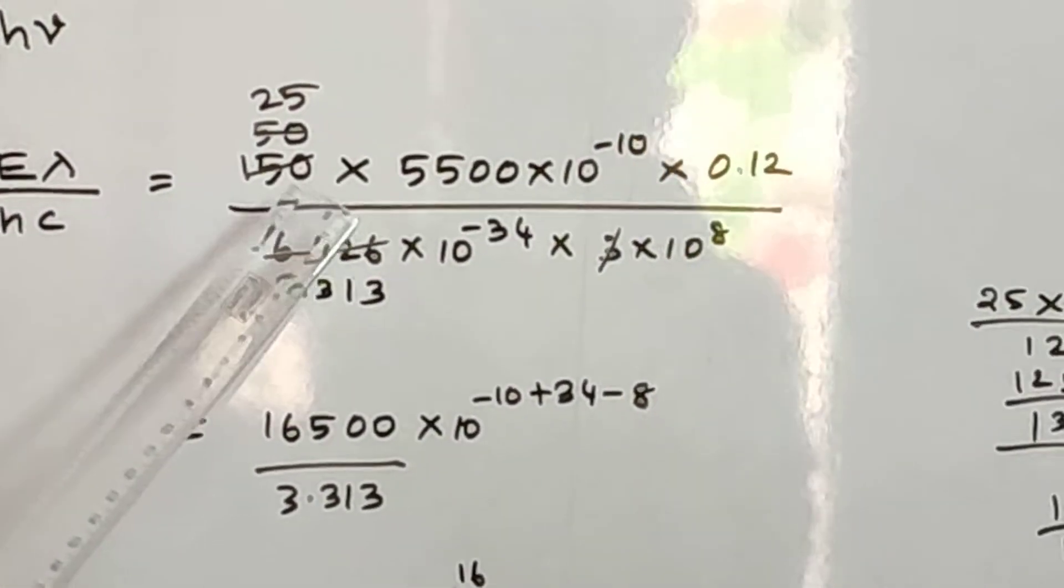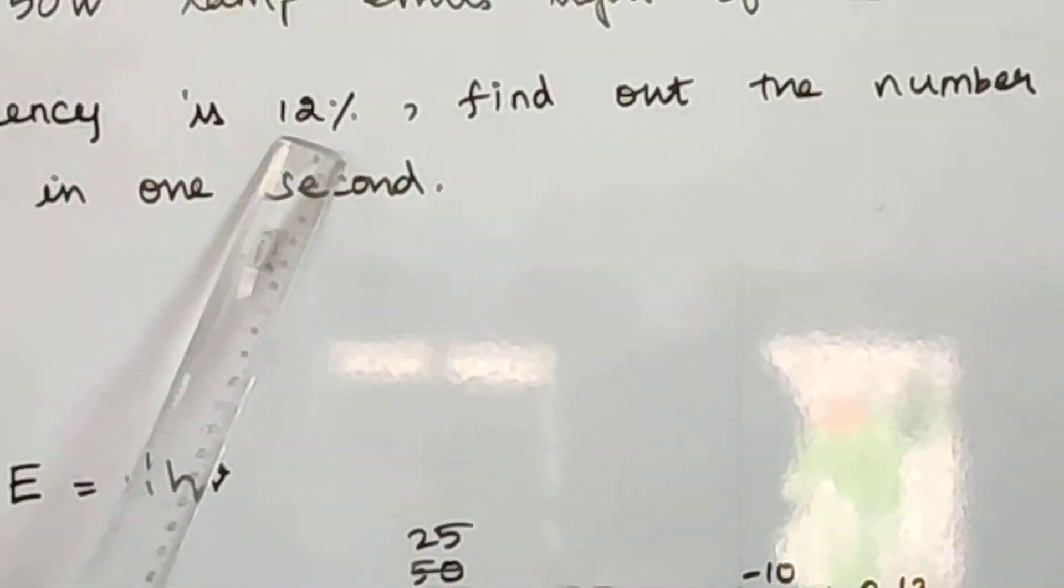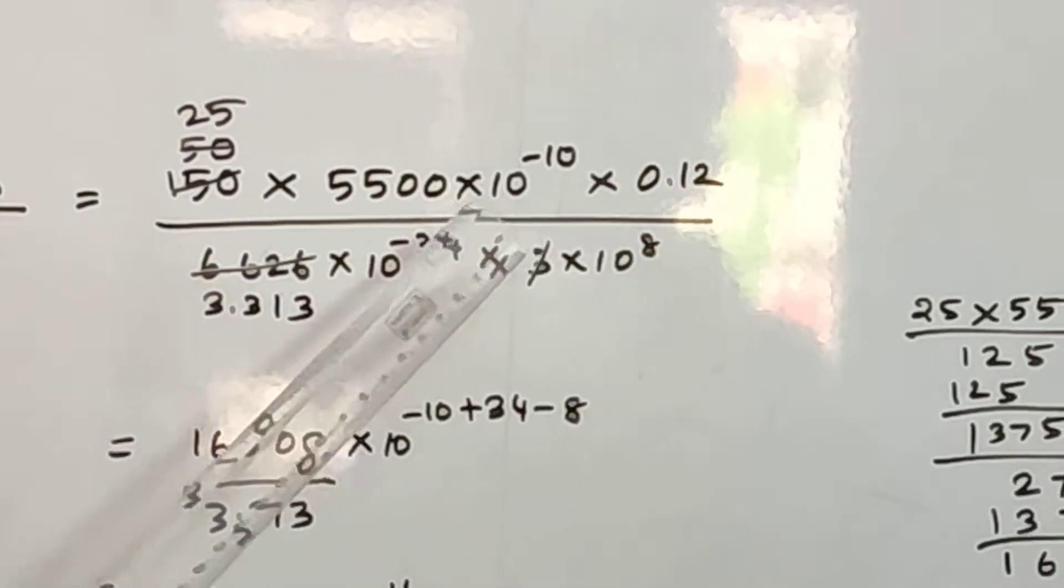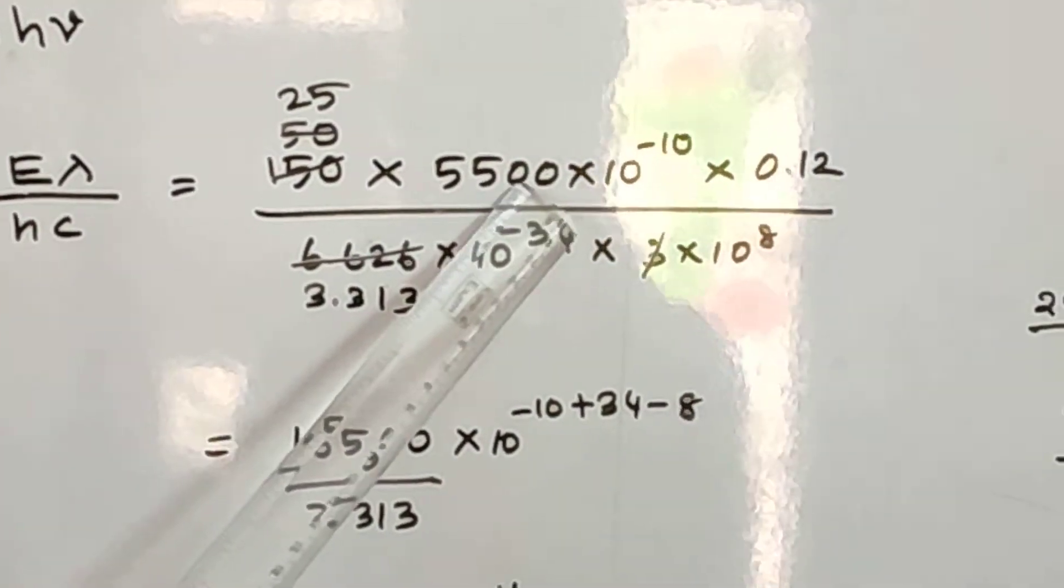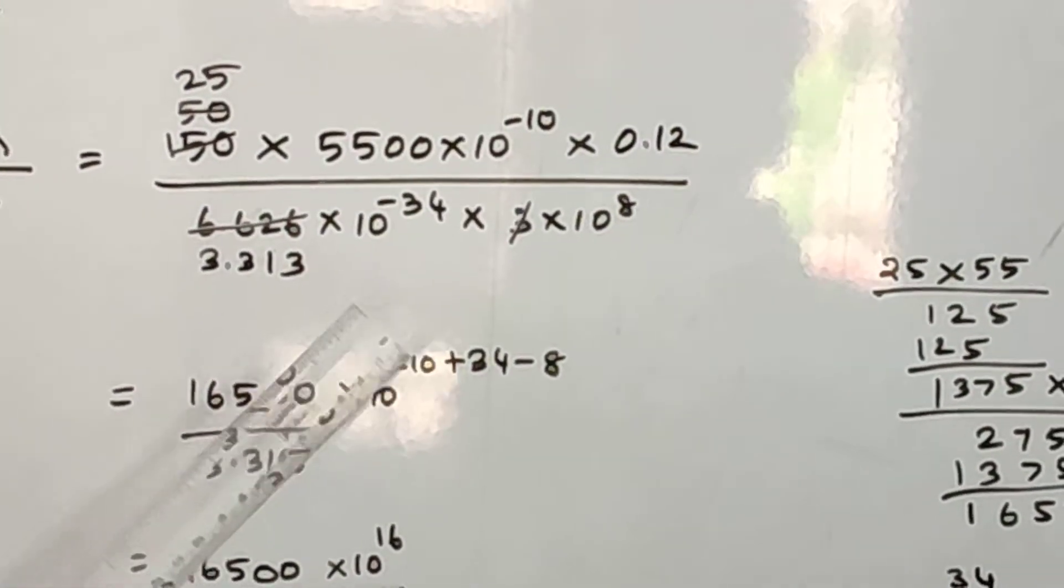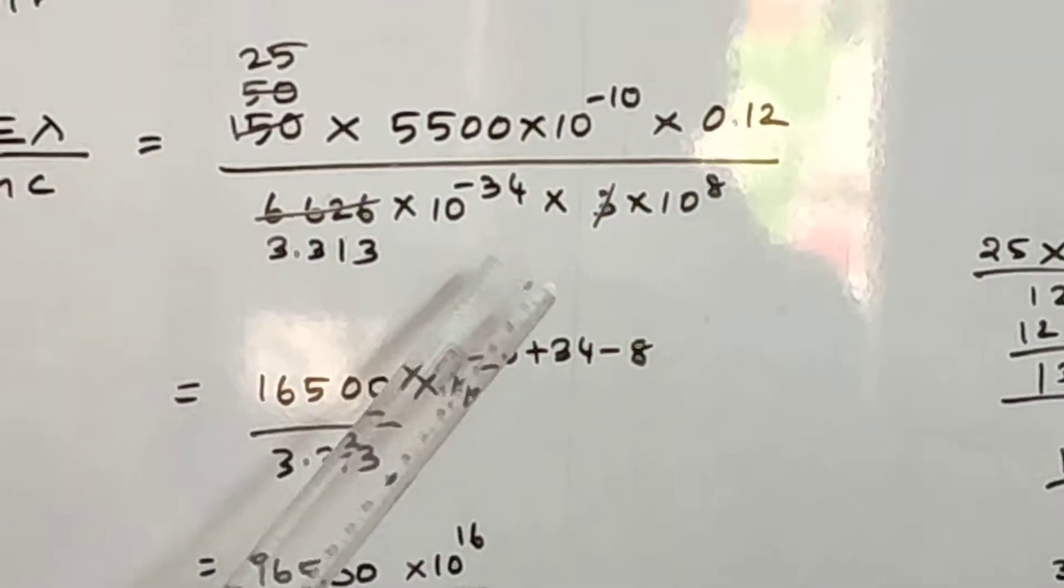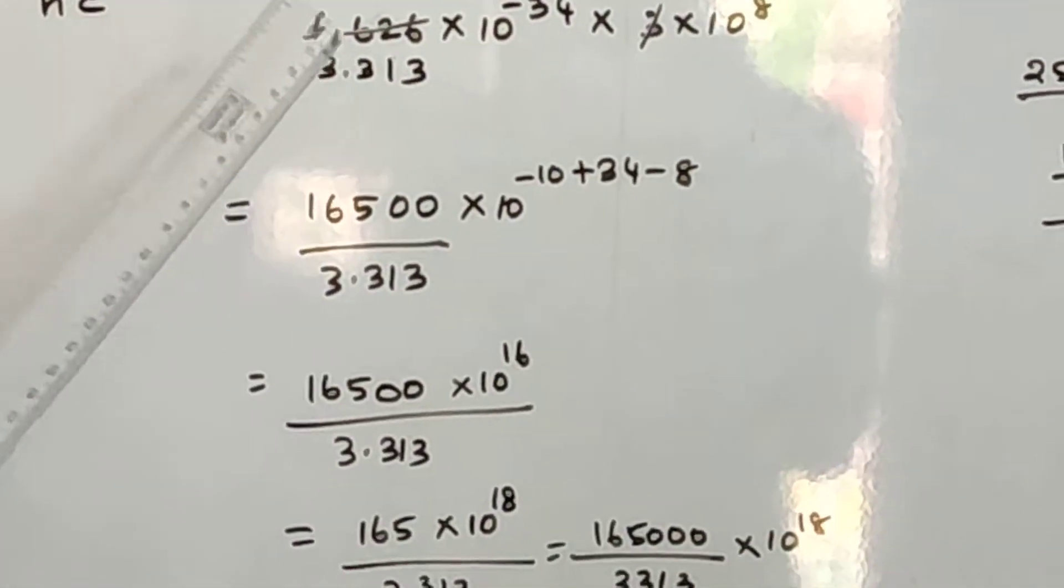Power energy is 150 into efficiency 12 percentage, 12 by 100 is 0.12. Multiply into wavelength 5500 Angstrom, that is 10 to the power of minus 10, by H value 6.626 into 10 to the power of minus 34, into velocity of light 3 into 10 to the power of 8.